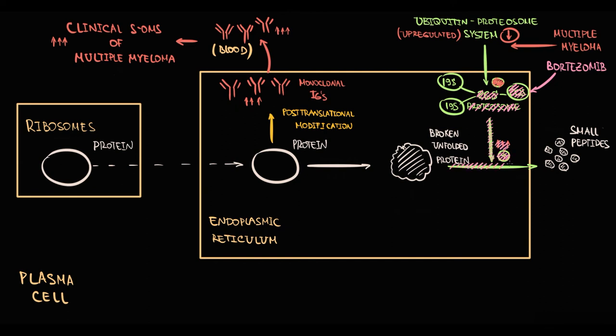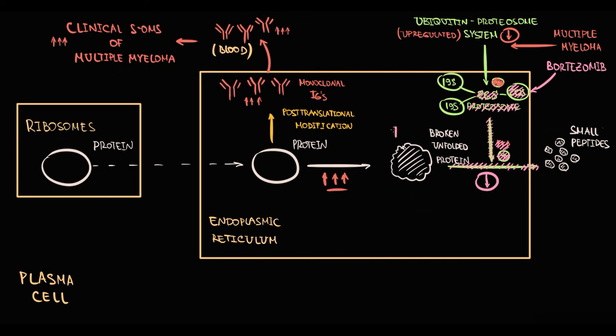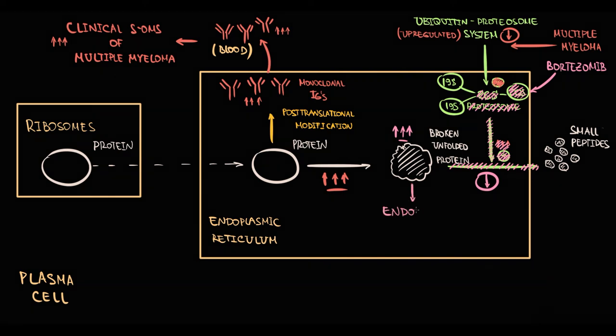Thereby, degradation of unfolded proteins decreases, but their production remains the same. So with time, they begin to progressively accumulate inside the endoplasmic reticulum. And at some point, the amount of unfolded proteins become so high that it causes endoplasmic reticulum stress.